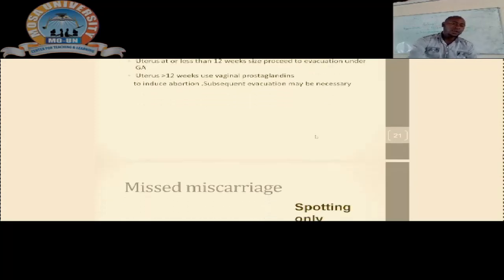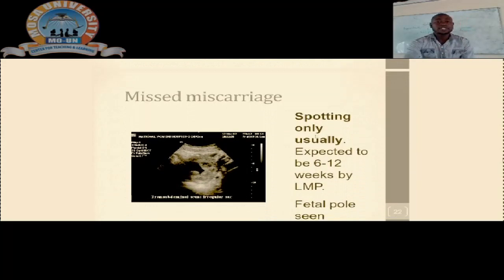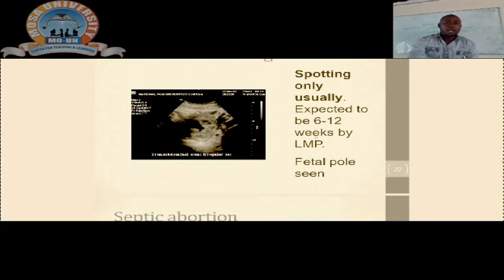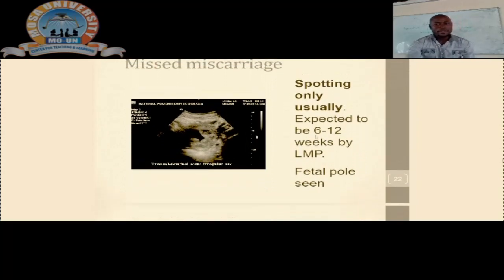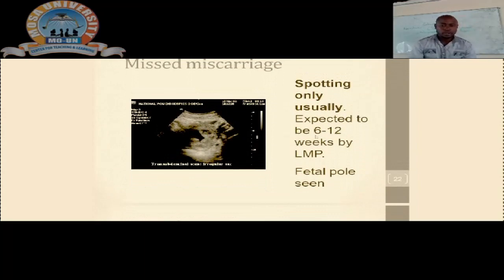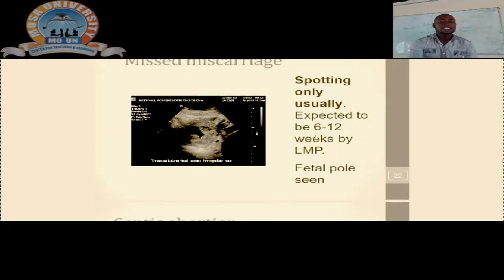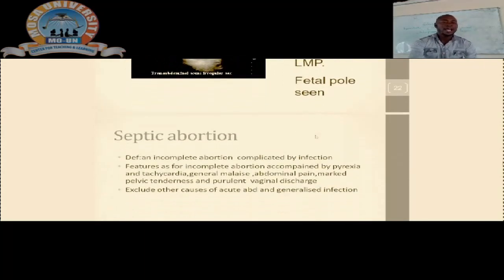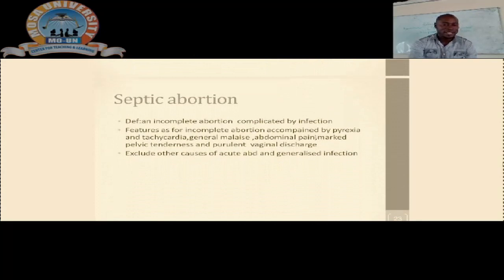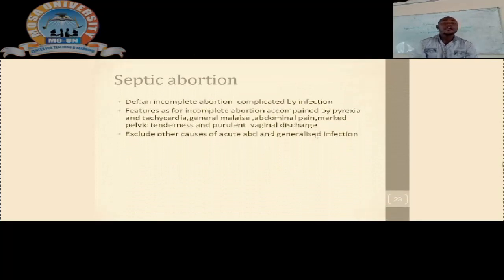In a missed miscarriage, sometimes there is only spotting, mostly occurring between 6 to 12 weeks after the last menstrual period. On ultrasound, you find the presence of a fetal pole, indicating continuation of a pregnancy.